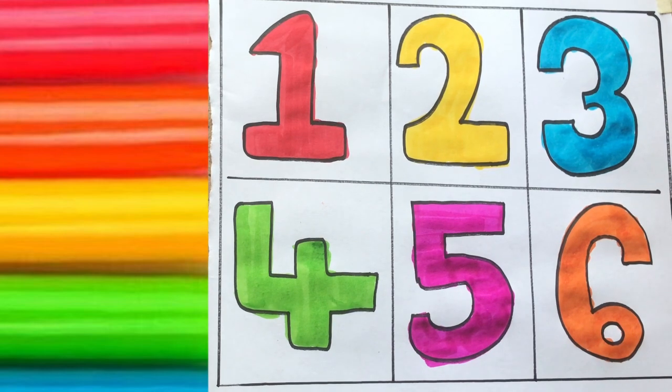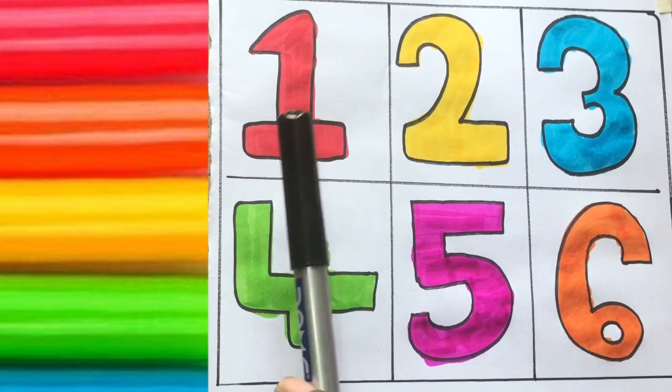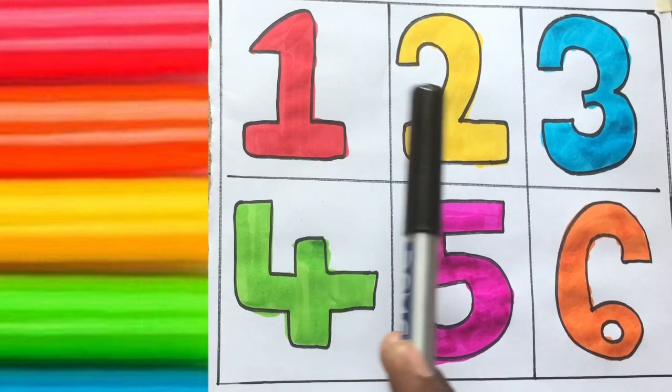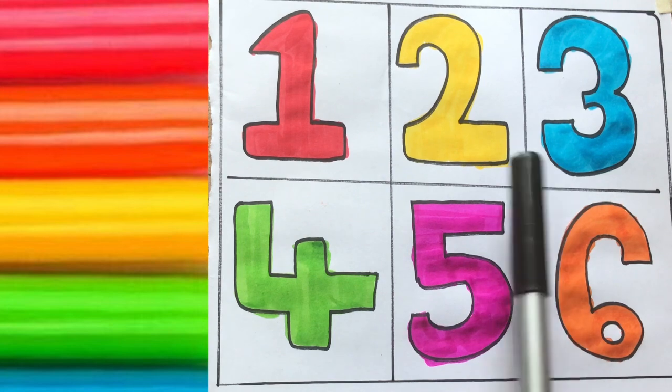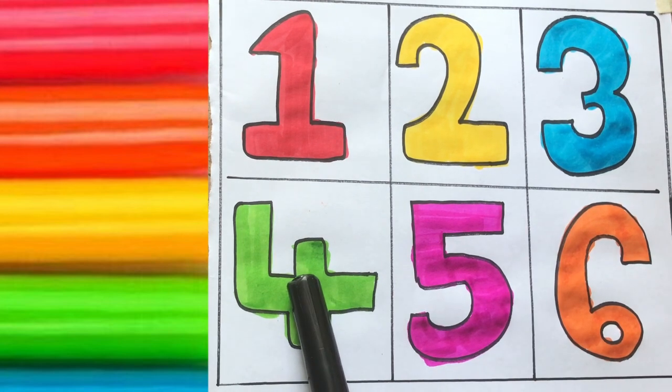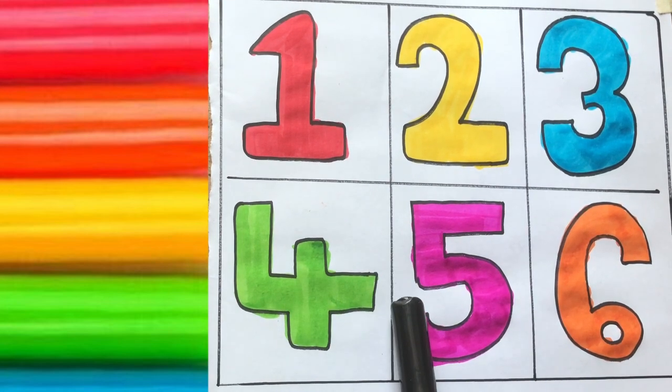One, O-N-E, One. Two, T-W-O, Two. Three, T-H-R-E-E, Three. Four, F-O-U-R, Four. Five, F-I-V-E, Five. Six, S-I-X, Six.